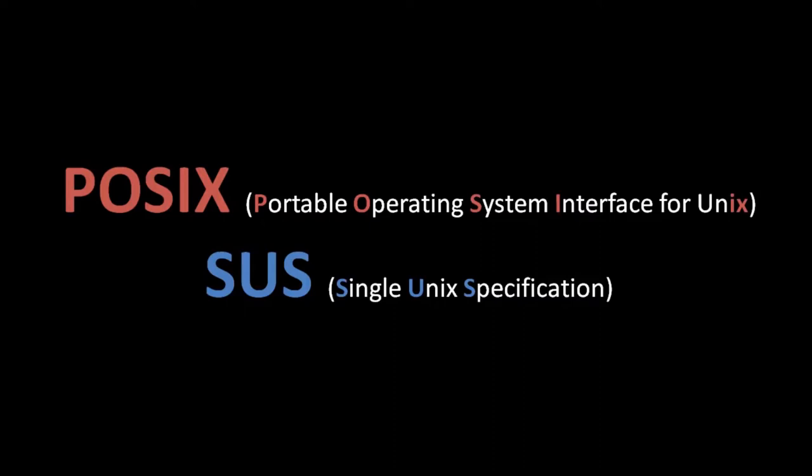These standards also fail to entirely solve the problem of portability because they don't specify everything about a Unix system — they are rather limited in their scope. There are many features of today's Unix systems which work totally differently on different Unix systems, or in some cases exist only on some Unix systems but not others. It is possible today to write programs which will run on any Unix system as long as you stay within the bounds of the two standards, but as soon as your code uses platform-specific features, you will probably have to do extra work to get it to run on other platforms.